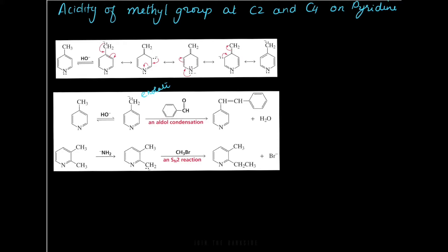Regarding the acidity of the methyl group at C2 and C4 position on pyridone: if you have a methyl group in the second or fourth position, the methyl hydrogens are going to be very acidic. You can compare the acidity of this hydrogen to the acidity of the alpha hydrogens on a ketone — they have essentially the same acidity. Because they are acidic, they can be acted on by bases, where the base grabs the hydrogen making a carbanion, which is resonance-stabilized with the nitrogen.